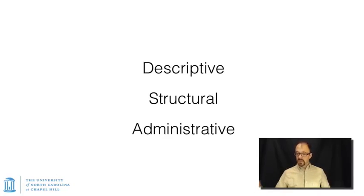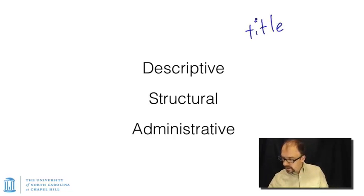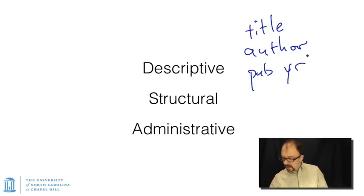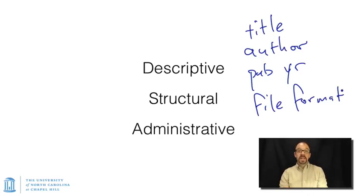Now we've already talked about description, and these are the three basic types of metadata: descriptive, structural, and administrative. There are subcategories of these, and we'll get into all of these more as we go along. Descriptive metadata provides information about a resource—title, author, publication year, file format. All of these are very common pieces of descriptive metadata about any kind of resource.